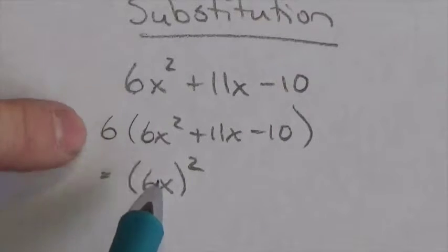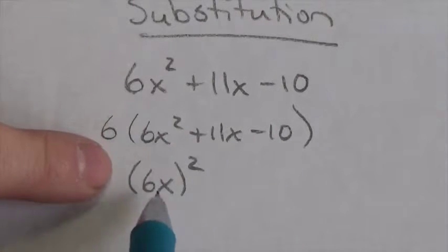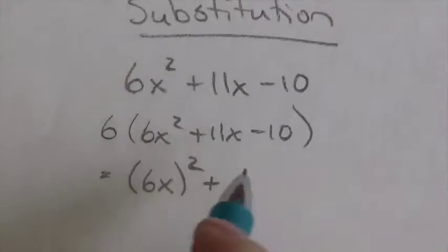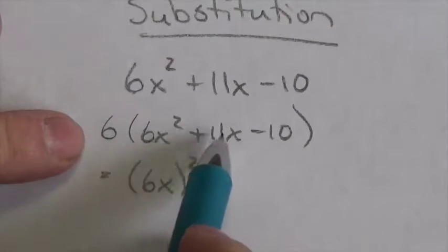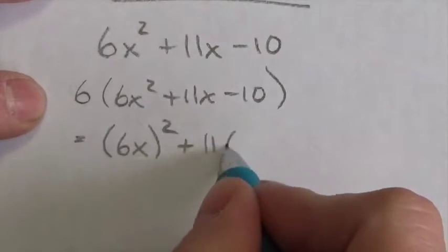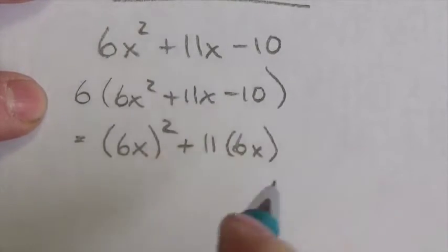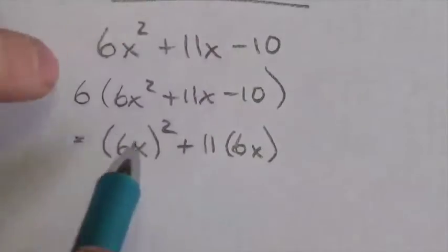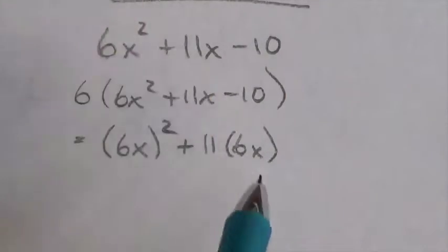Because when I multiply this by 6, the 6 is being squared, so is the x. So it's kind of like 6x squared. I'm going to multiply this by the 11. Now that would get me 66x. But I'm actually going to write this as 11 times 6x. And that's because I can change the order. 6 times 11 is the same as 11 times 6 and I'm good.